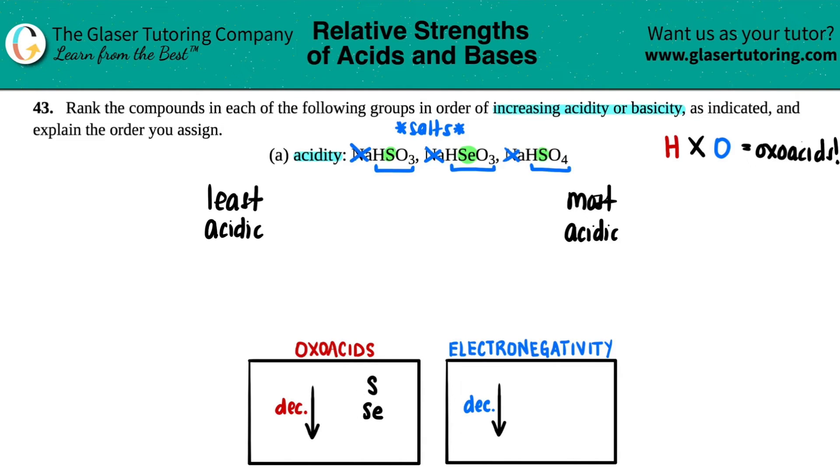So the selenium would be your least acidic. I'm going to put that one over here, so I have NaHSeO3 as my least acidic. So this one's done.